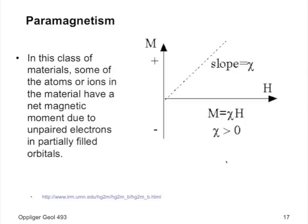Paramagnetism: there are unpaired electrons in partially filled orbitals, giving a net magnetic moment. Again, you take the applied field and multiply it by the magnetic susceptibility k or chi. For paramagnetism, chi is greater than zero, so the induced M adds to the total field instead of subtracting from it.